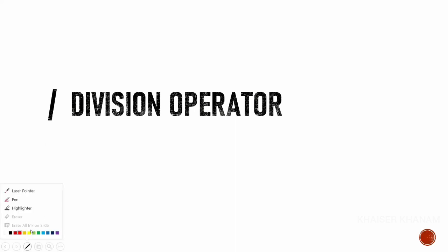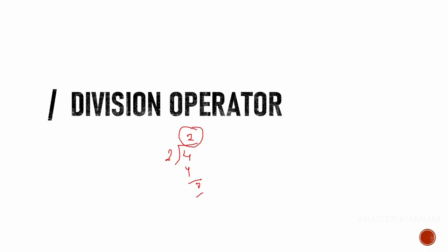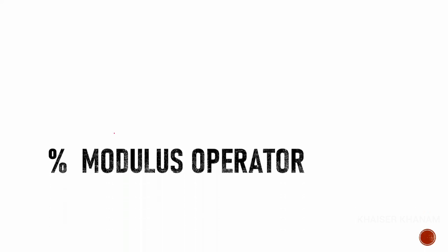For example, 2 divided by 4 — 2 twos are 4, so the remainder will be 0 and the quotient is what division gives us. The modulus operator is used to get the remainder from a division operation.